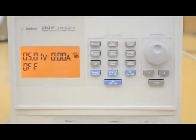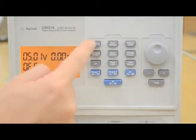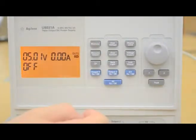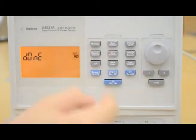We need to save the voltage and current limit in the output on setting to memory. Press the memory button to enter memory mode. Press the memory button again to save it to M1.